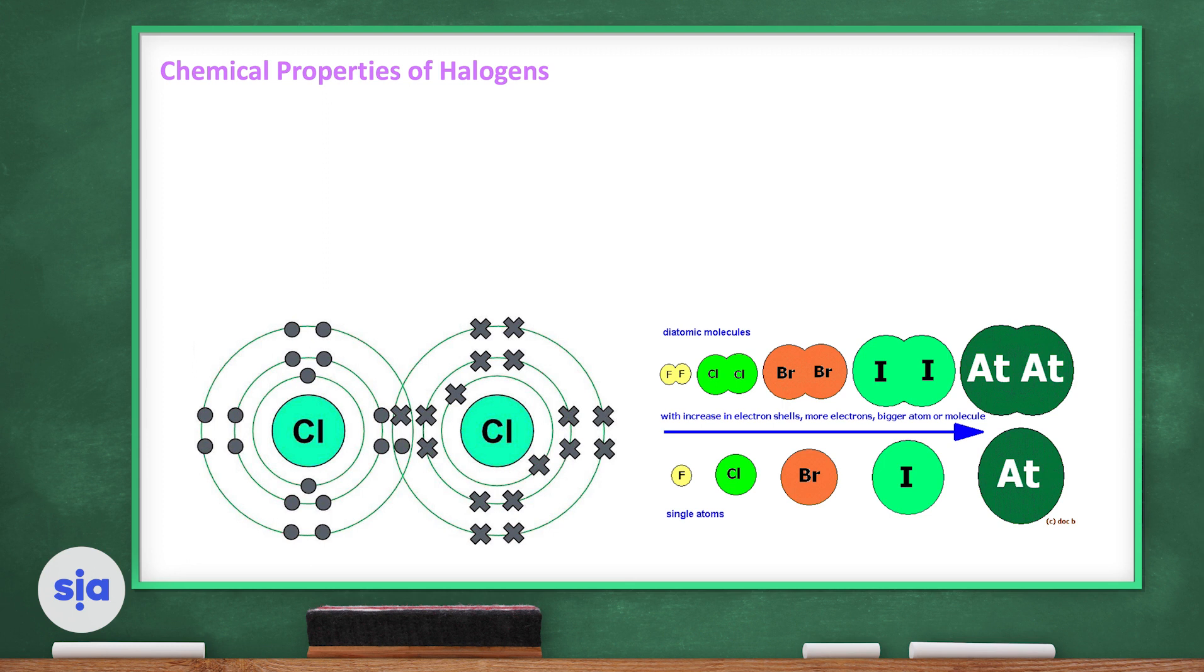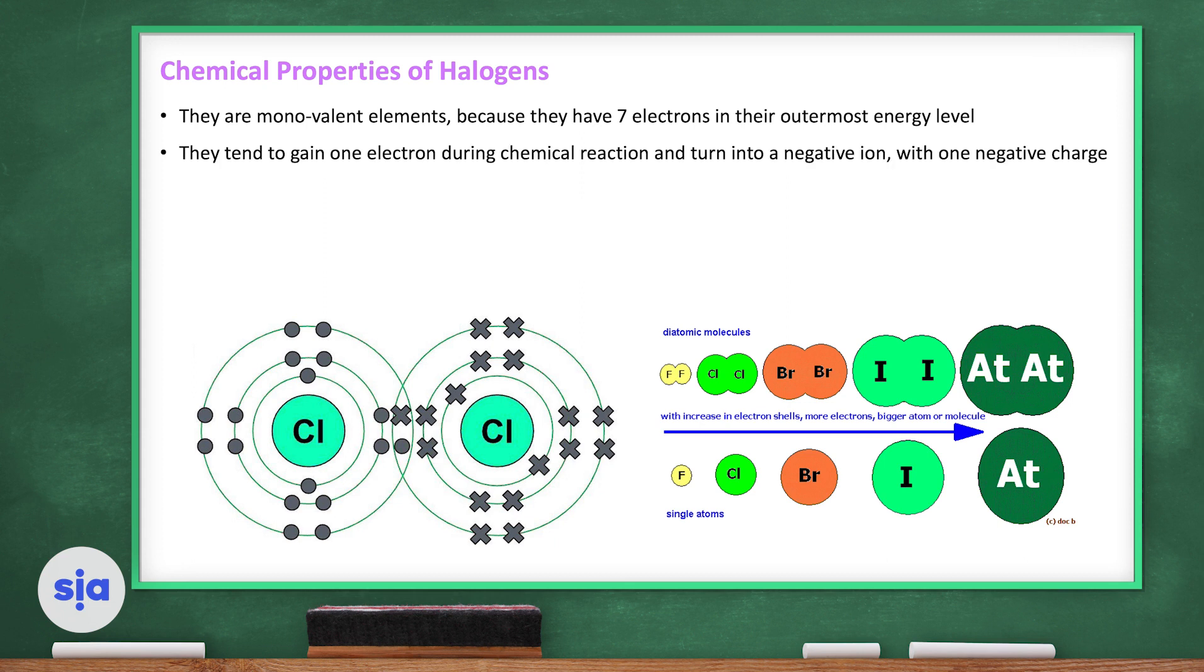Chemical properties of halogens. They are monovalent because they have seven electrons in their outermost energy level. They tend to gain only one electron during chemical reaction and turn into a negative ion with one negative charge.